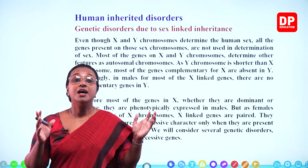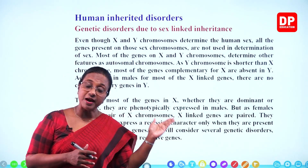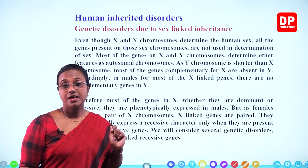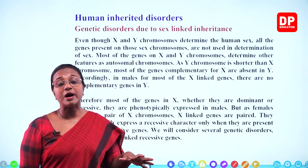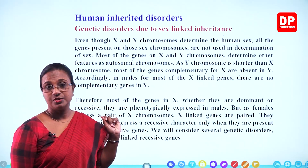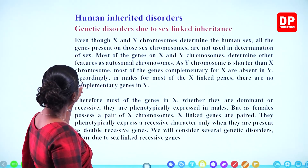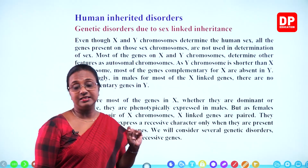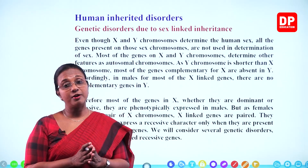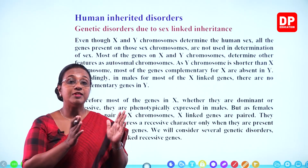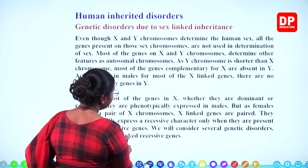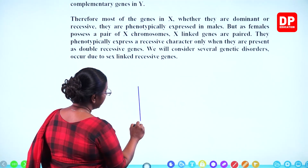Just as people inherit characteristics from previous generations, they can also inherit disorders if the disorder is caused by a gene. Under human inherited disorders, we will first look at genetic disorders due to sex-linked inheritance. You are familiar with the 23rd pair of chromosomes — the X and Y chromosomes — where XX is female and XY is male.